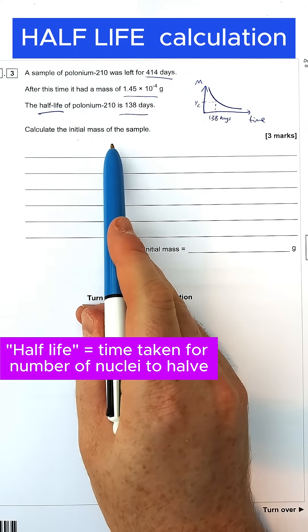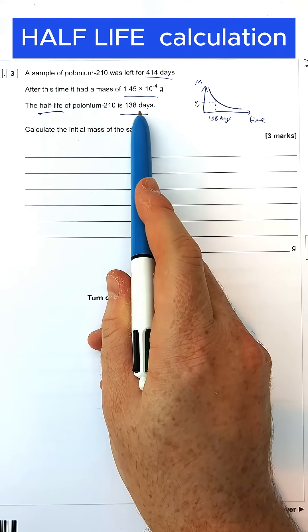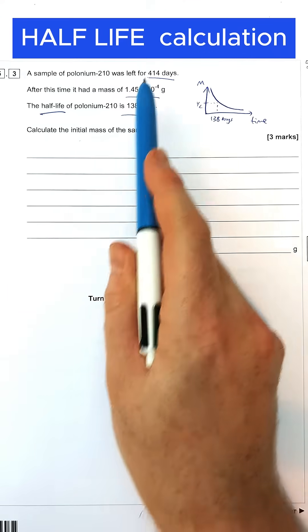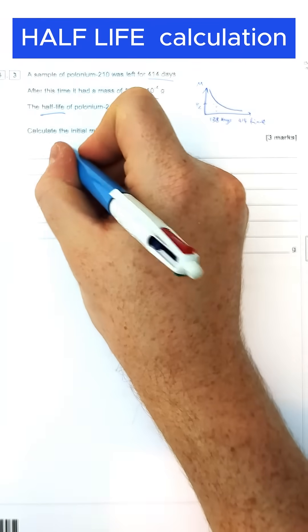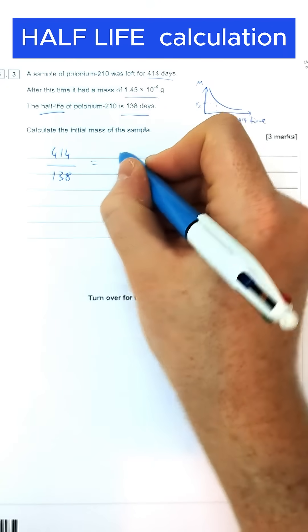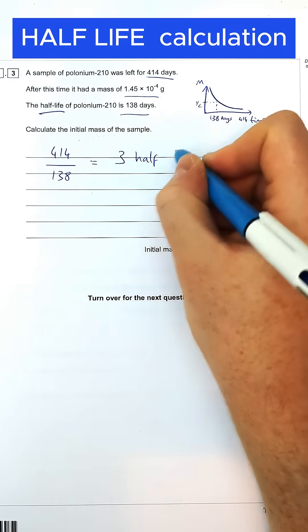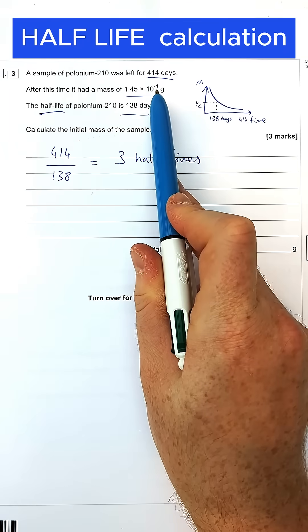To work out the initial mass of the sample, what we're going to have to do is figure out how many half-lives have passed. So one half-life is 138 days. The total amount of time is 414. So 414 divided by 138 days gives us an answer of three half-lives have passed since the initial value and the time now after 414 days.